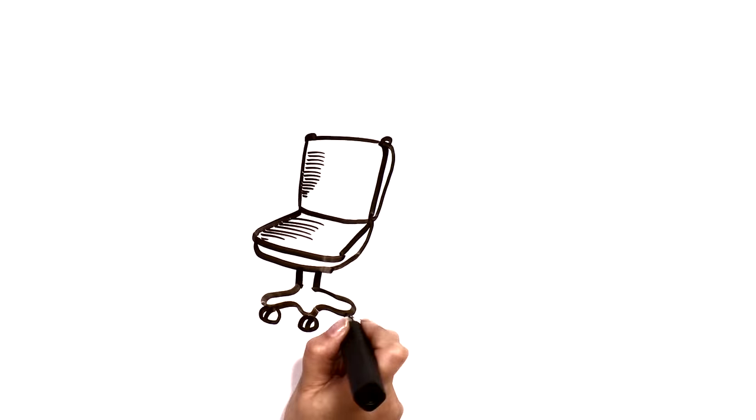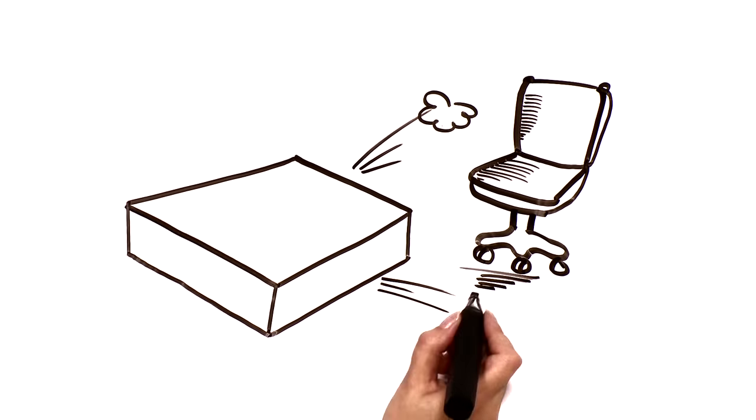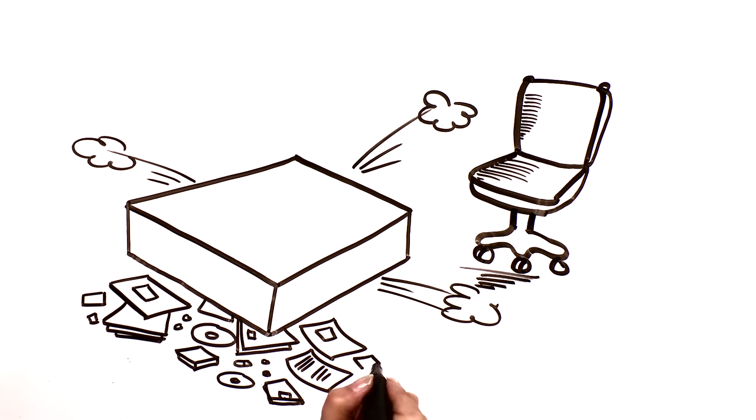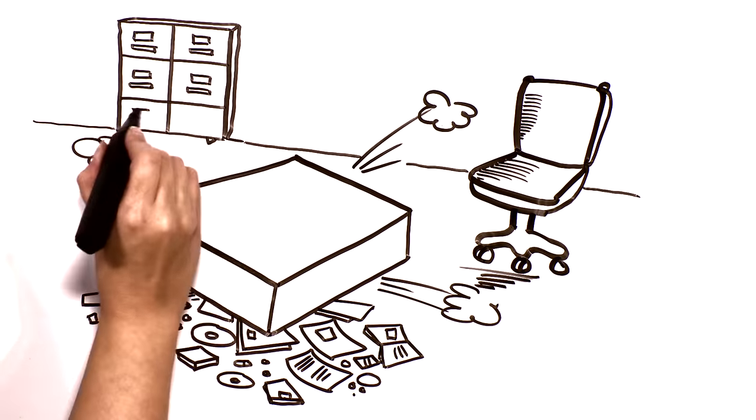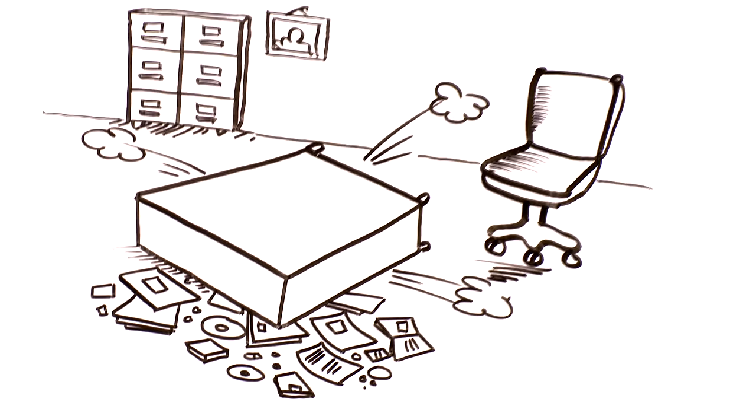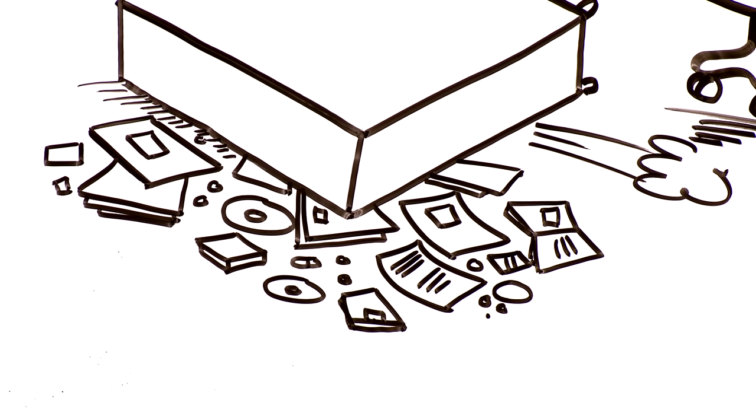Also, your brain holds lots of different files or memories. Sometimes when your brain gets rocked, it's like a file cabinet that gets knocked over. The files spill onto the floor and thoughts get scrambled. Sometimes the memory files just get lost. You might not even remember the accident or that afternoon.